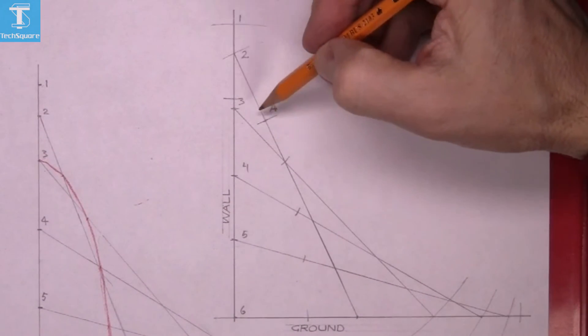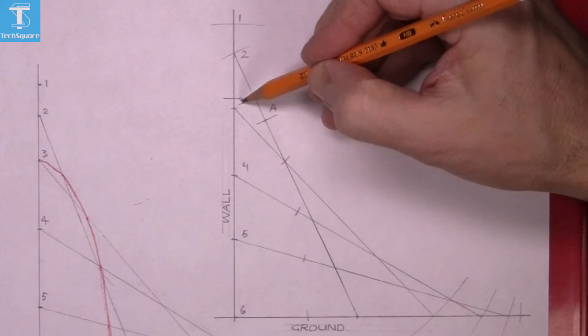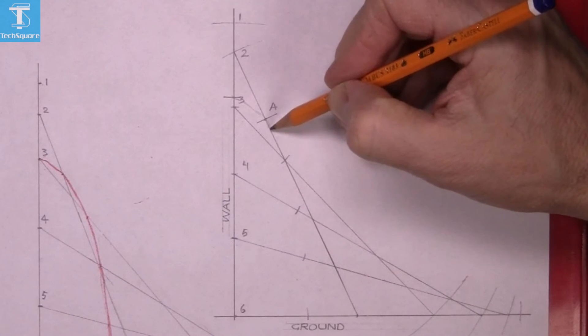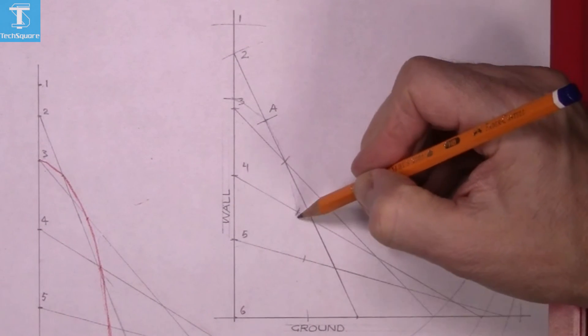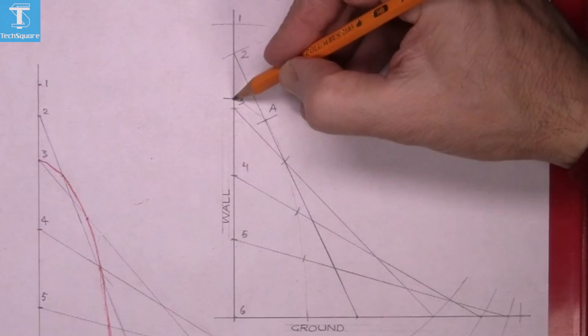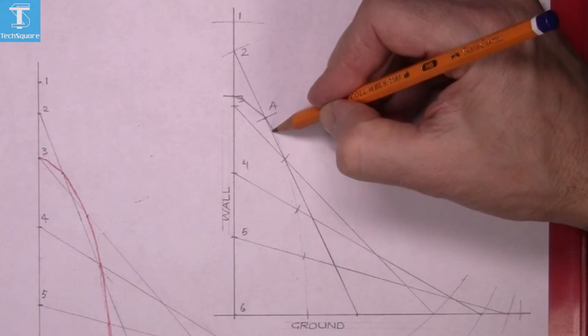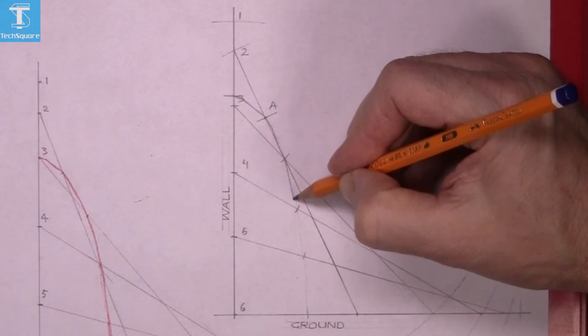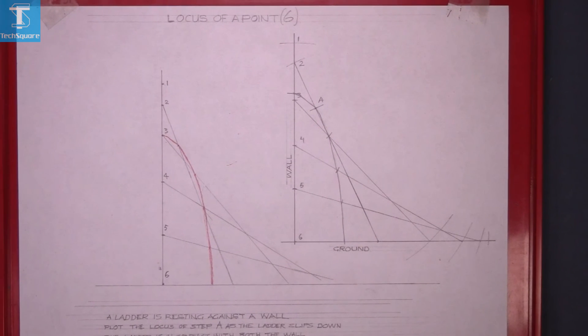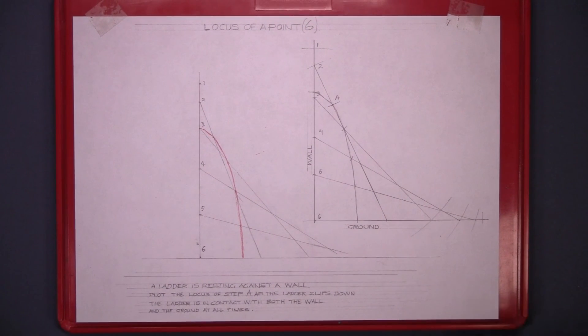Now we join those points, just a freehand curve again as before, freehand curve down through the points, and that's the locus of point A as the ladder slides out in the bottom, with the top of the ladder in contact with the wall and the bottom of the ladder in contact with the ground all the time. That's your question complete.